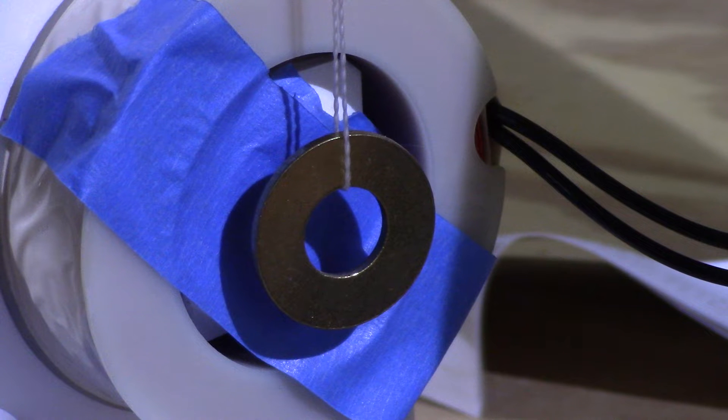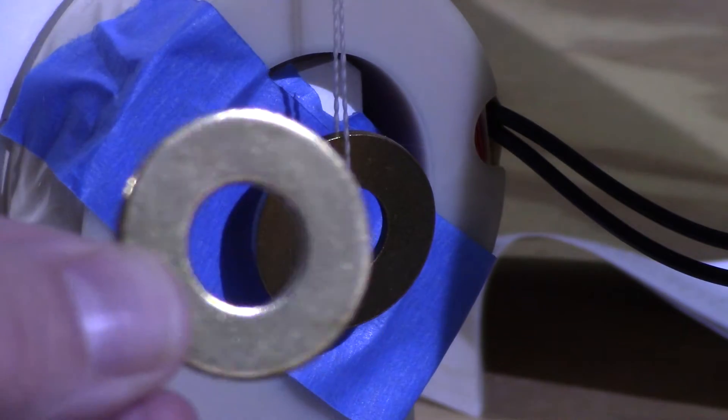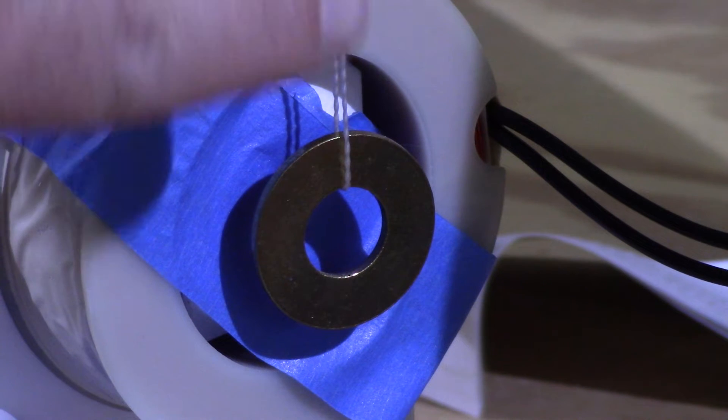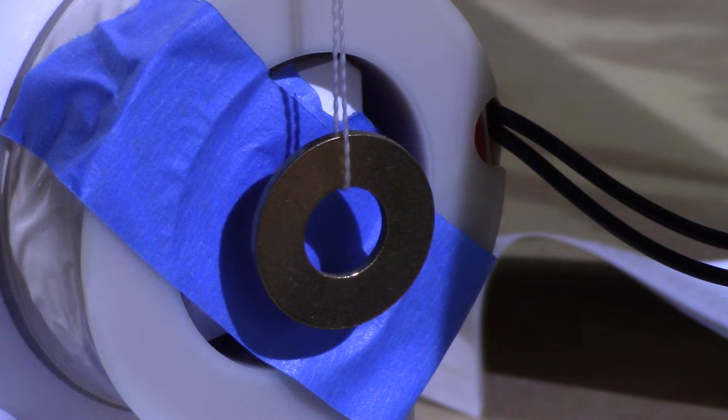What we have here is a standard magnet coil in this white ring. Underneath the blue tape is our core, which consists of a non-ferrous brass washer. Suspended in front of the magnet by a string is our target, the thing we're trying to attract. That's another non-ferrous brass washer.